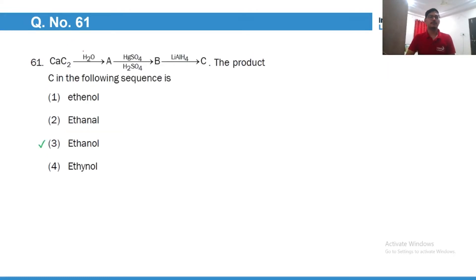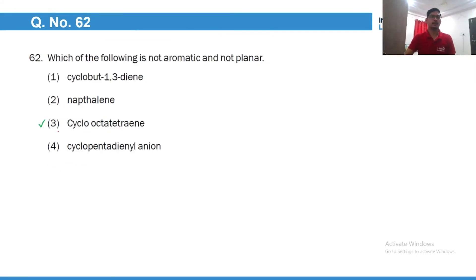The hydrolysis of calcium carbide will give acetylene, which on hydration will give acetaldehyde, and which on reduction will give you ethanol. Which of the following is not aromatic and not planar? Of course, cyclooctatetraene. This molecule exists in non-planar form, puckered form to avoid anti-aromaticity. So it is, we call it, it is tub shaped like this. So this is the correct answer.